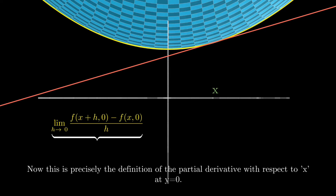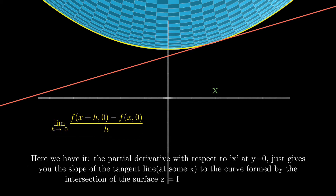This is precisely the definition of the partial derivative with respect to x at y equals zero. The partial derivative with respect to x at y equals zero gives you the slope of the tangent line to the curve formed by the intersection of the surface z equals f(x, y) and the plane y equals zero.